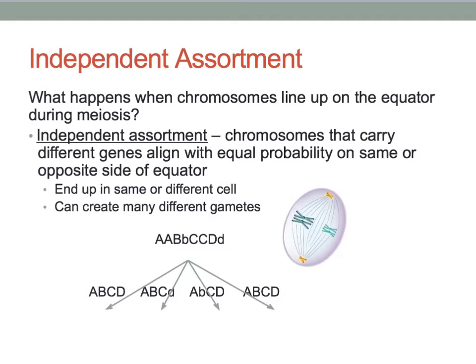For example, if a parent has the genotypes big A, big A, big B, little b, big C, big C, big D, little d on different chromosomes, then there are four different genotype combinations possible for the gametes.